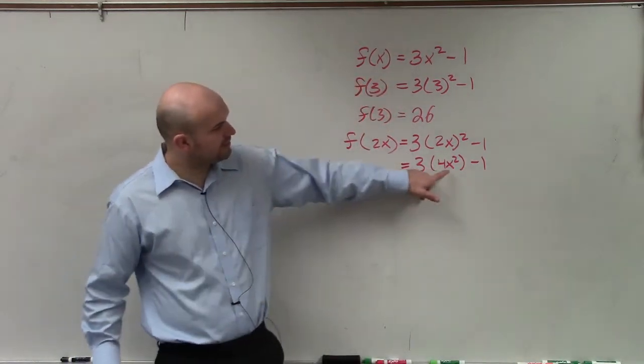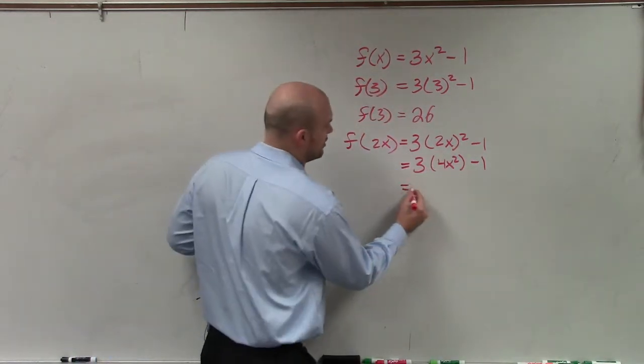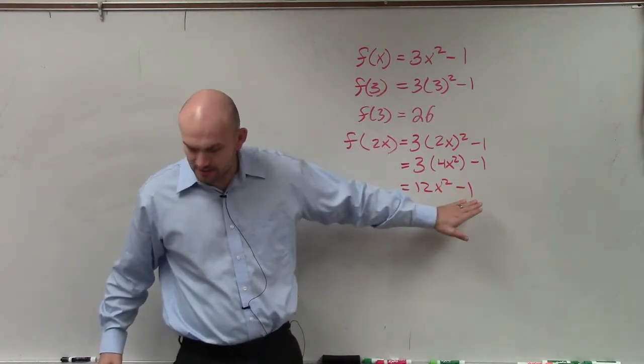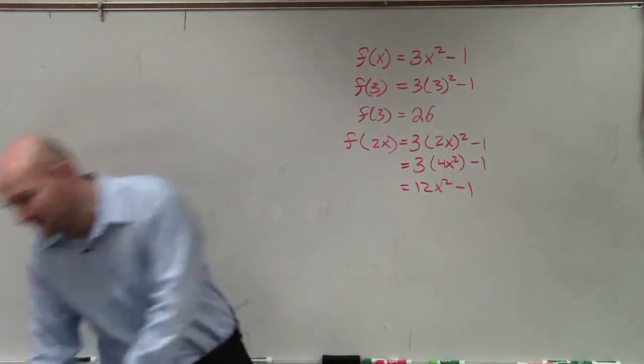Then I multiply 3 times 4x squared, which is 12x squared, minus 1. And since these are not like terms, I cannot simplify it any further.